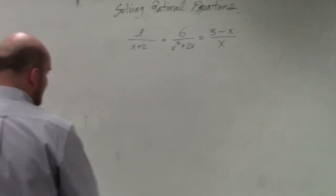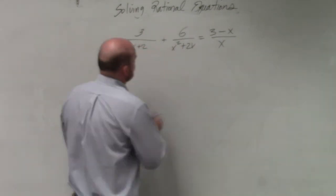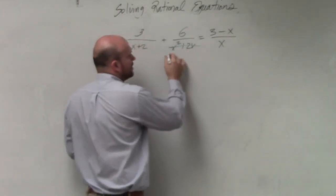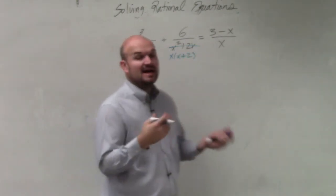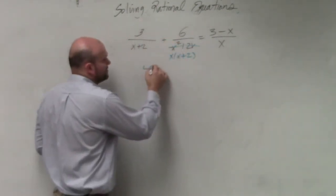So when identifying the factor, again, we need to factor this. So I can factor this to x times x plus 2. So again, by identifying the LCD, what I'm doing is I'm looking for my unique terms.